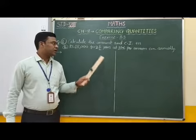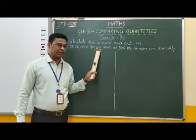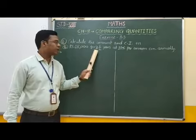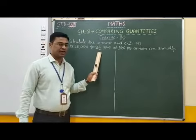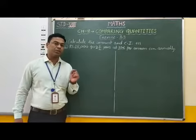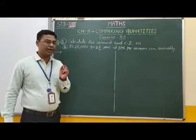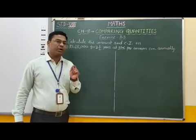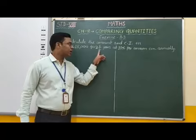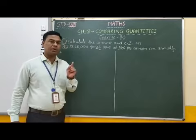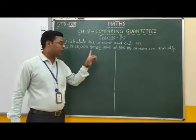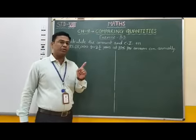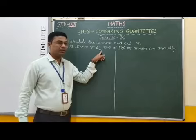Students, if you observe here, the number of years is given as a mixed fraction. Therefore, we are going to study how to find compound interest when the number of years is given in mixed fraction. To solve this question, first we have to find the amount at compound interest for 2 years. After that, by taking this amount as principal, we have to find simple interest for the remaining half year.